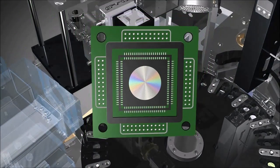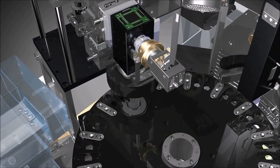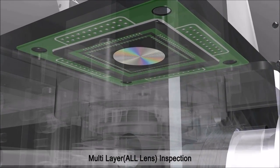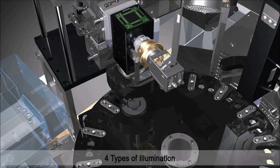In the next process, upper surface and all lens surfaces are inspected by variable focus using Y-scope. Y-scope captures images using four types of illumination.